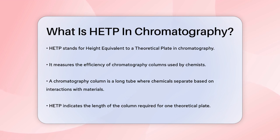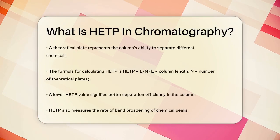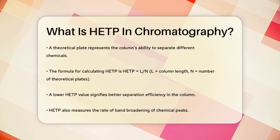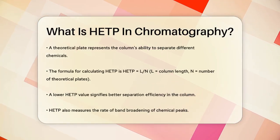HETP is essentially the length of the column that is needed to achieve one theoretical plate. A theoretical plate is a measure of how well the column can separate different chemicals, with more plates indicating better separation.